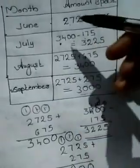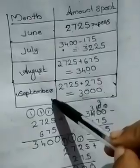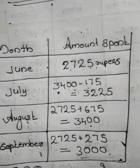Now we have found the amounts spent in June, July, August, and September. For the second question: in which month was it the most and the least? We want to find in which month the most amount was spent. The most amount is in the month of August — 3,400 rupees. The least amount is 2,725 rupees, in the month of June.